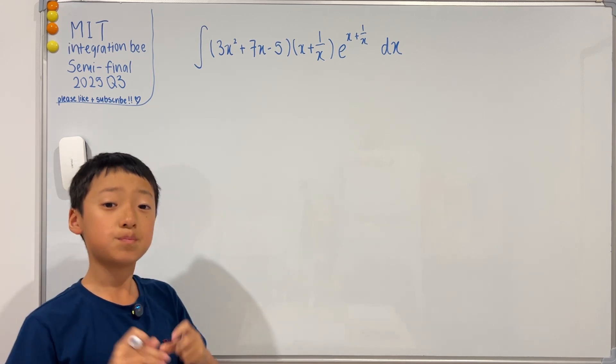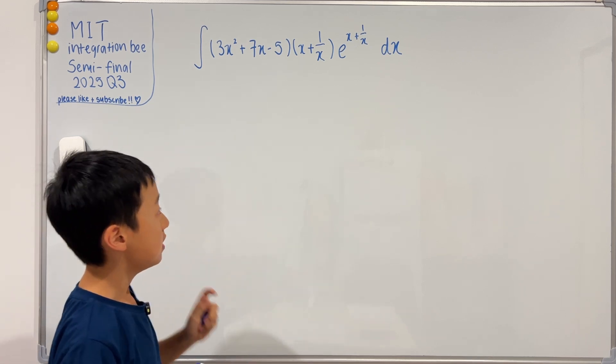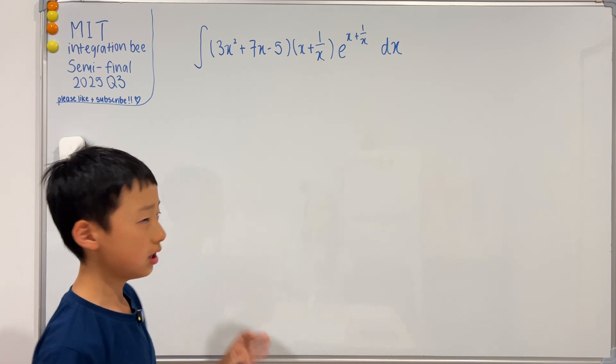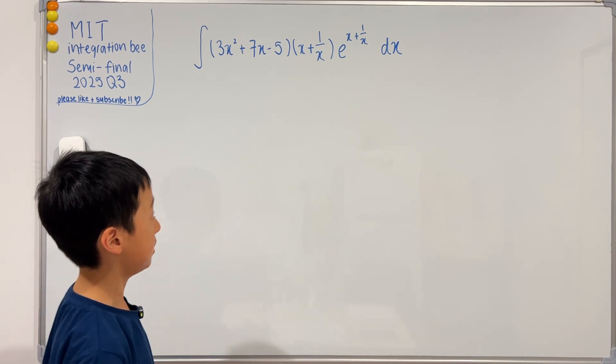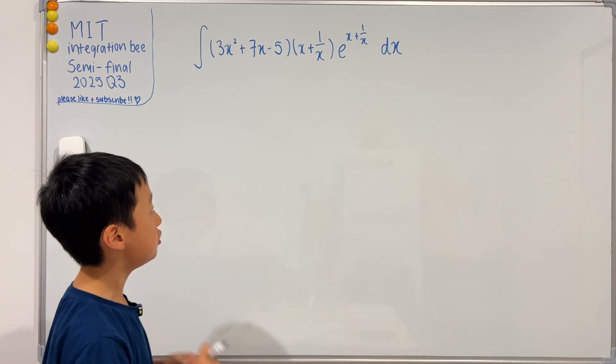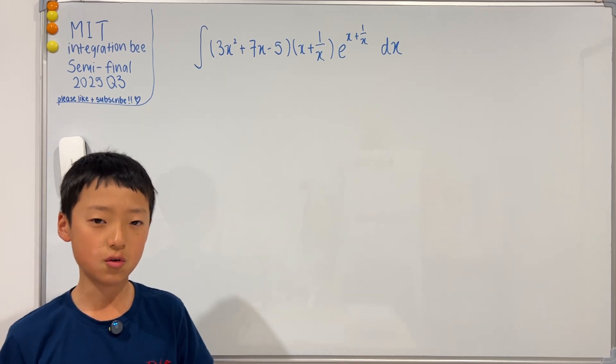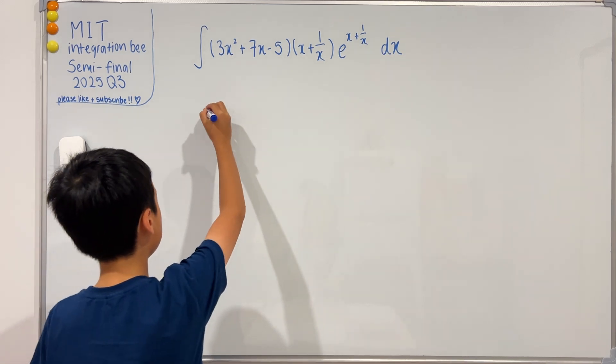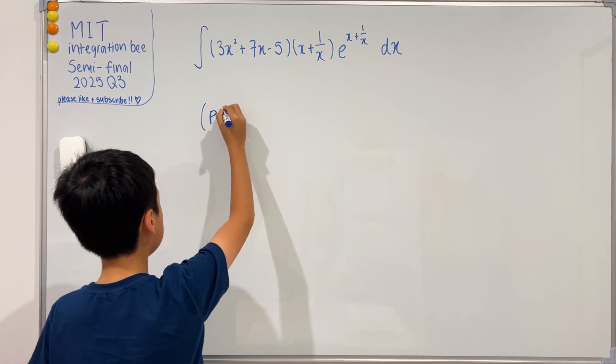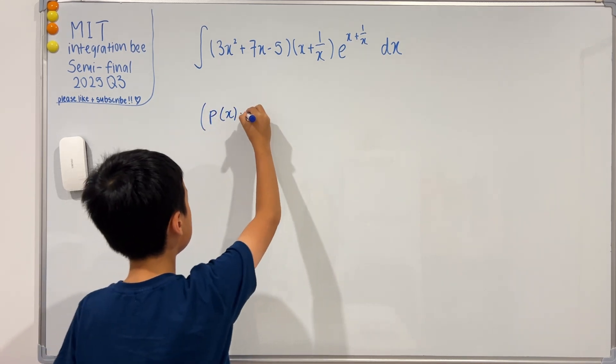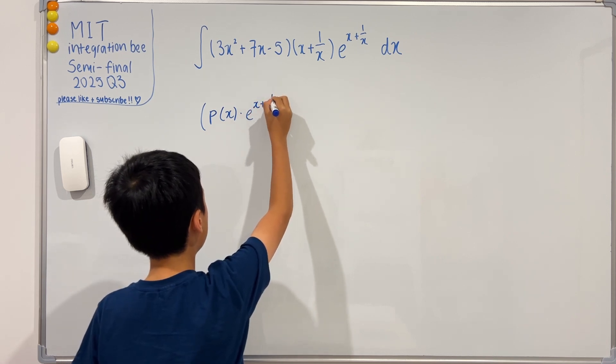This means that this integral is probably the answer to the product rule of some function with e to the x plus one over x. So why don't we assume that function to be p of x? That means what we're trying to figure out is p of x times e to the x plus one over x, the derivative.